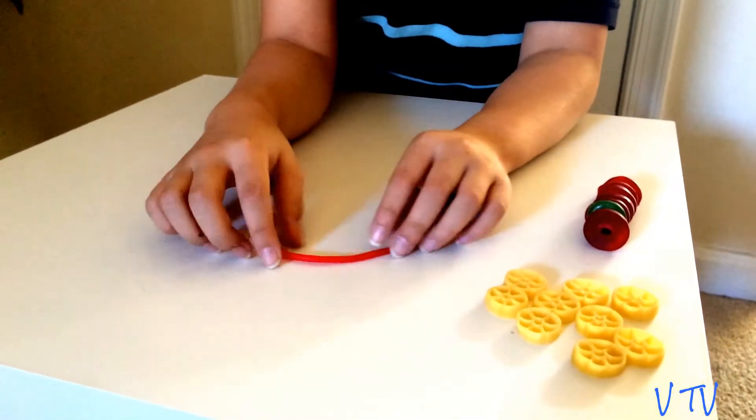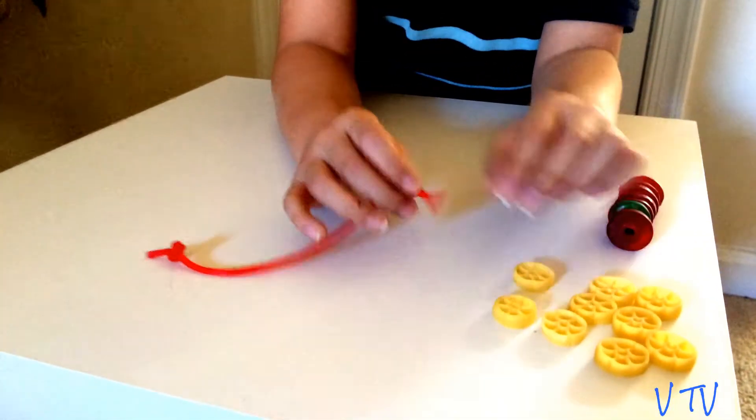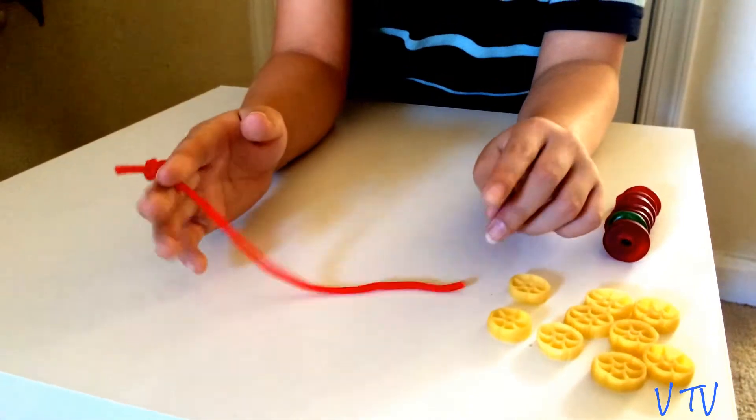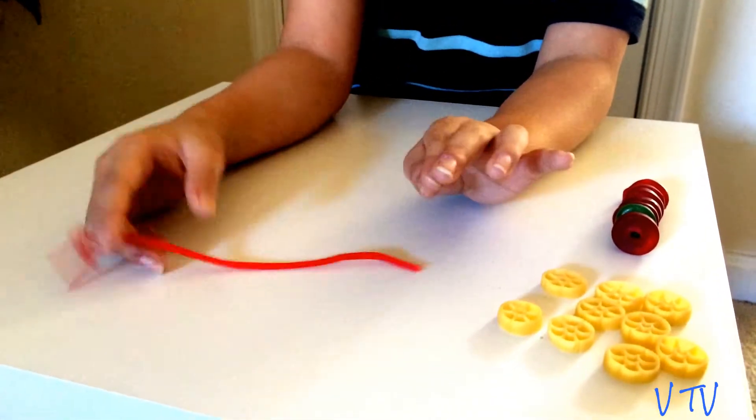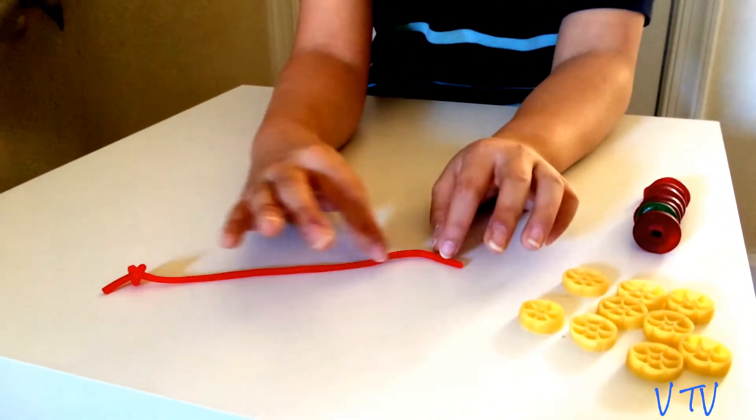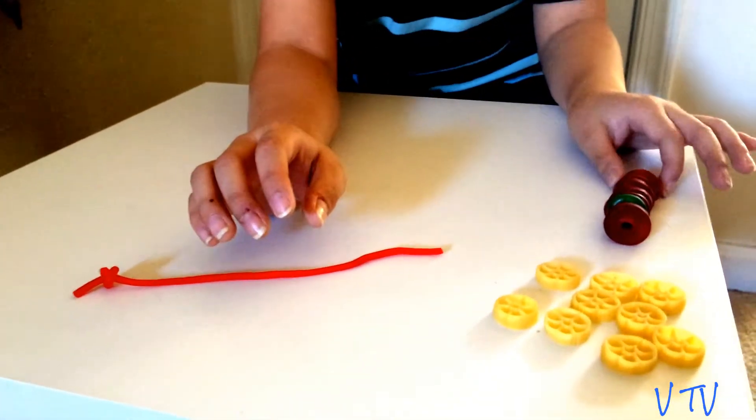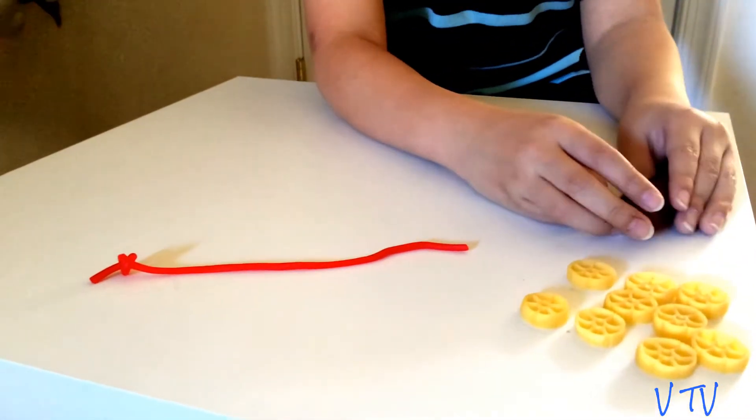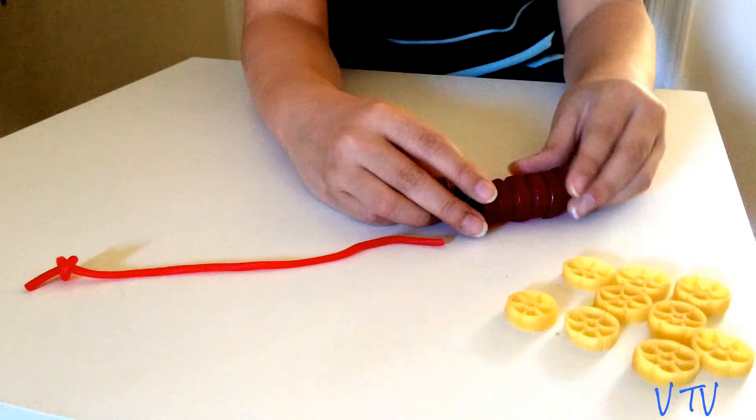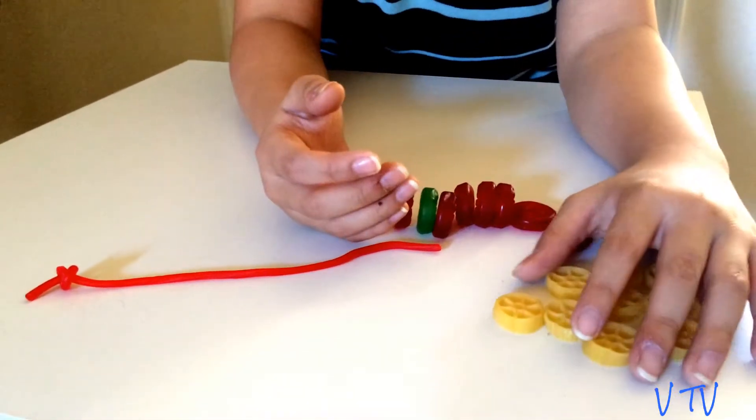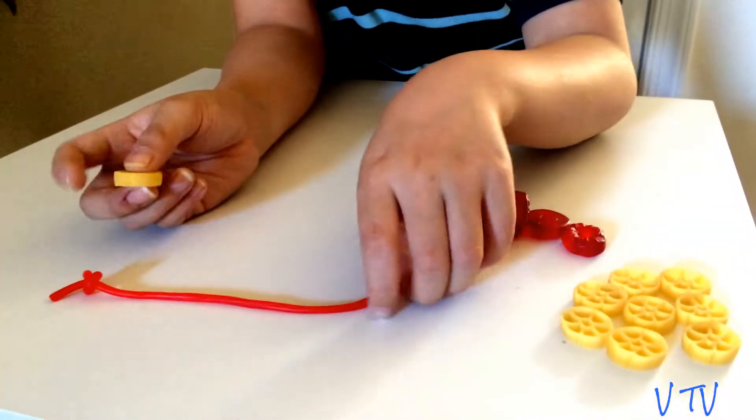Today we're going to be making a model of a backbone. What you'll need is a pipe cleaner, some jelly lifesavers, and some pasta. Now let's get started.